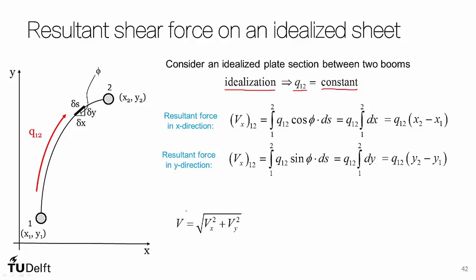Now if we want to figure out the total resultant force, we use Pythagorean theorem with the x and y components: V equals the square root of Vx squared plus Vy squared. The shear flow is constant in both Vx and Vy, and we essentially get the square root of the x distance and y distance squared, which is the linear distance between 1 and 2.